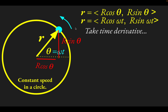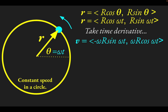To find the velocity, we take the time derivative of the position vector r. Taking the derivative of each component: the derivative of cosine is negative sine, so the x-component gains a negative sine term. We also get an extra factor of omega from the chain rule, since the argument of cosine is ω·t. Similarly, the derivative of sine is cosine, and again chain rule gives another factor of omega. So there's our velocity vector.